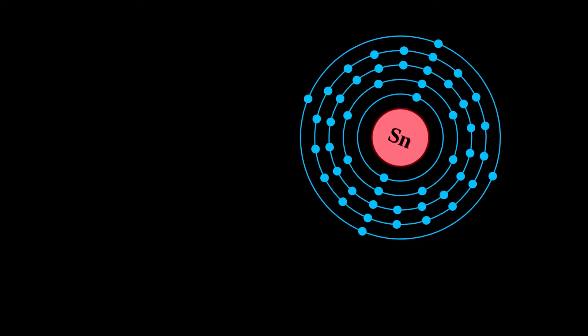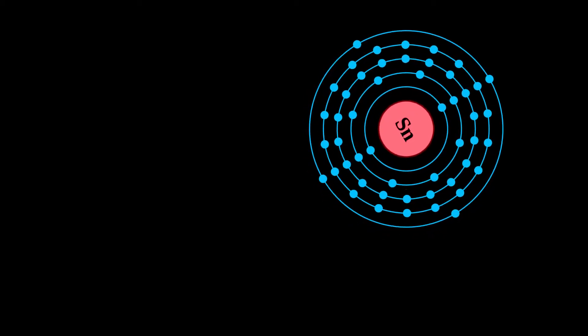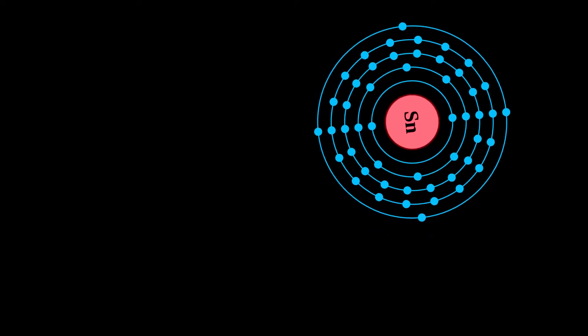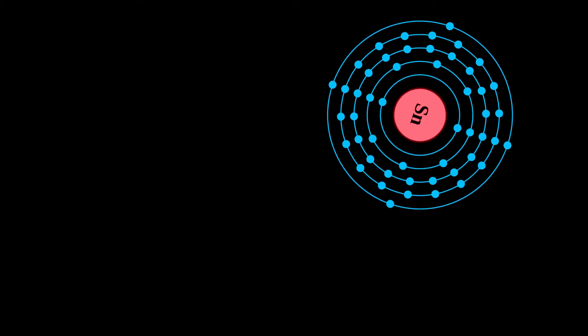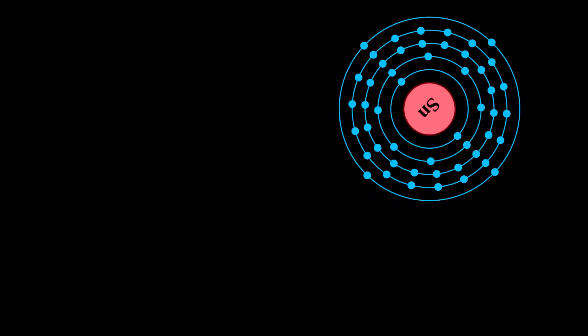Tin is the 49th most abundant element and has, with 10 stable isotopes, the largest number of stable isotopes in the periodic table, thanks to its magic number of protons.